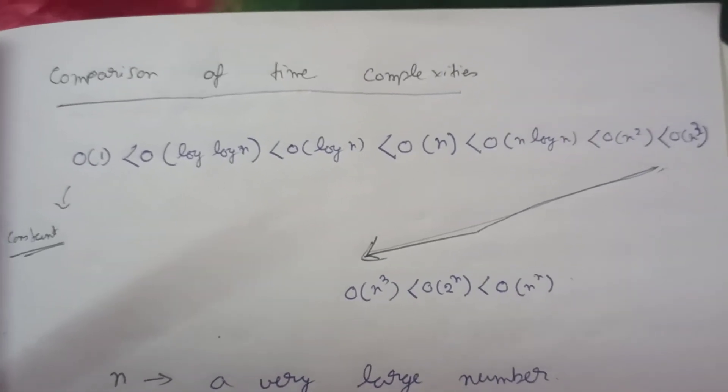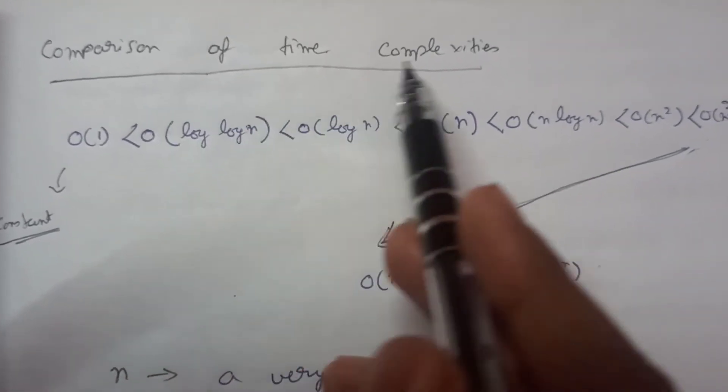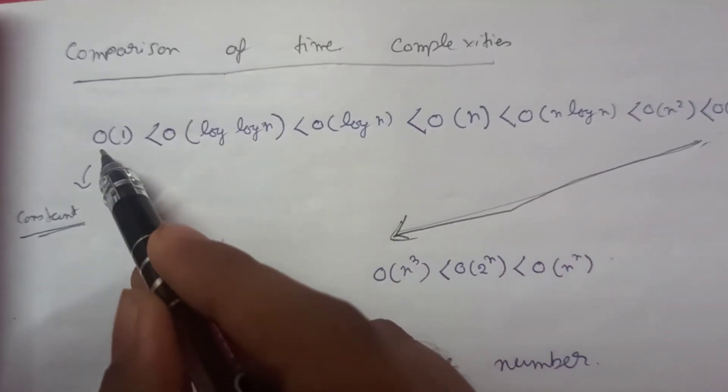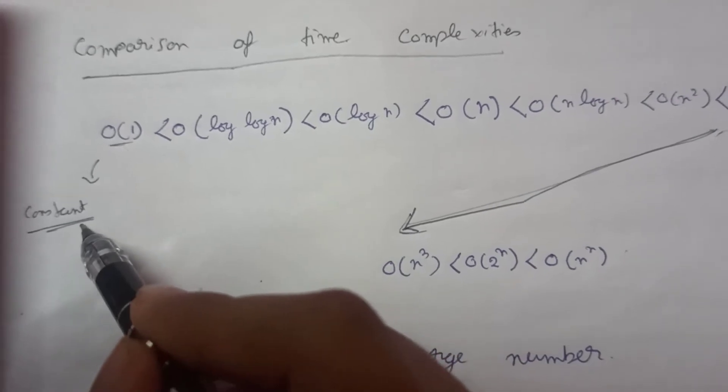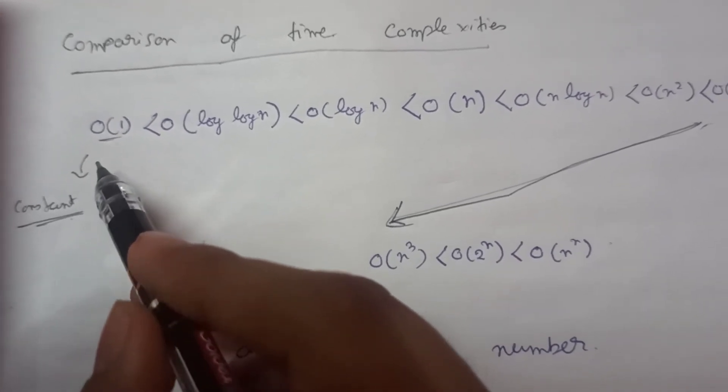Now let's check the relative order of time complexities. Compare among them. So first there is order of 1, that is the constant time complexity, and this is the lowest time complexity. Then we have order of log log n and order of log n.